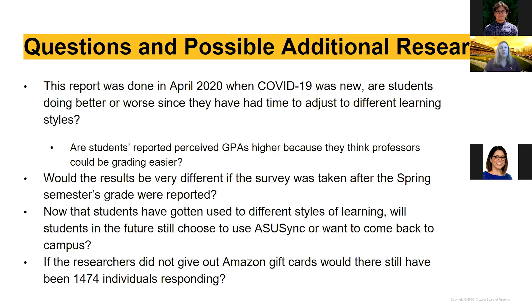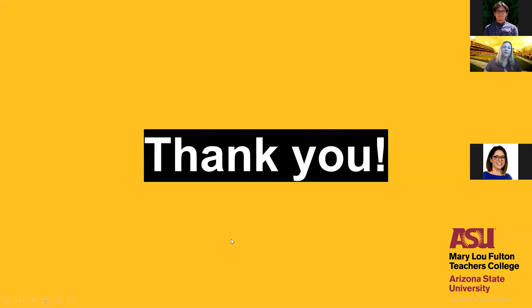Another thought is whether students reported higher expected GPAs in the beginning because professors were perhaps easier at first. Would the results be different if the survey had been taken in the fall semester? There is definitely additional research to be done. I'm also curious whether students will prefer online-only learning, ASU Sync, half-time on campus, or a full return — and whether this differs between freshmen, who may want the campus experience, and upperclassmen. I also wonder whether the $10 Amazon gift card incentive affected response rates, as people are generally not apt to fill out surveys without incentive. That is all I have — I look forward to any questions, and thank you all so much.